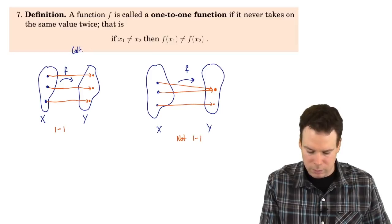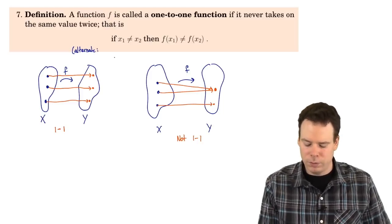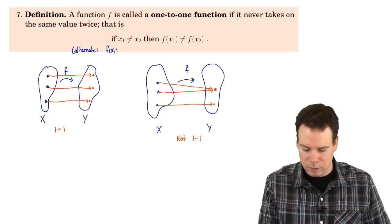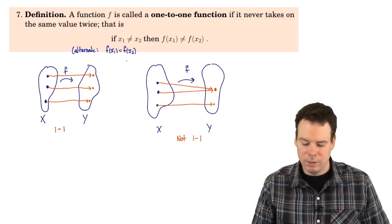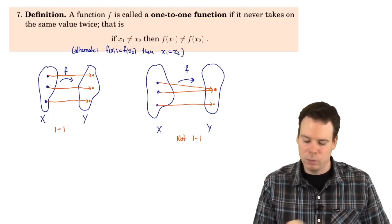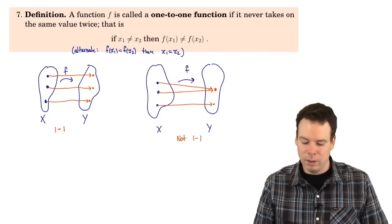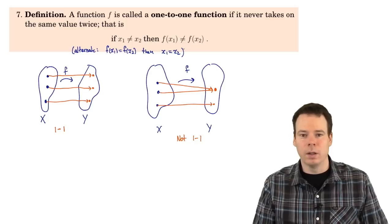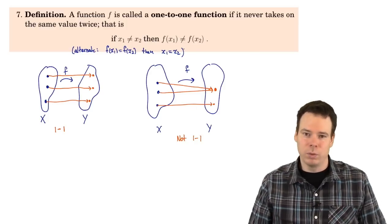There's an alternate way to write this which is equivalent. Alternatively, we could say that a function is one-to-one if the outputs are the same — if f(x₁) equals f(x₂) — then the inputs had to be the same; x₁ would have had to equal x₂. These are equivalent statements. You may see either one written when you look at descriptions of one-to-one functions.